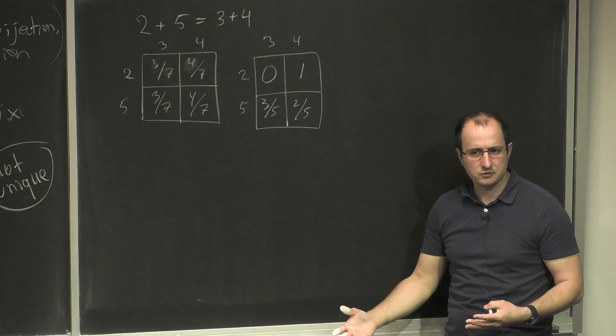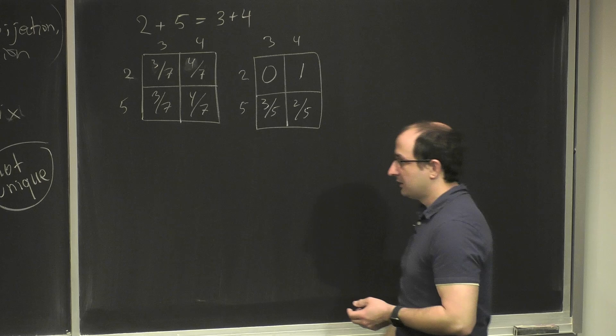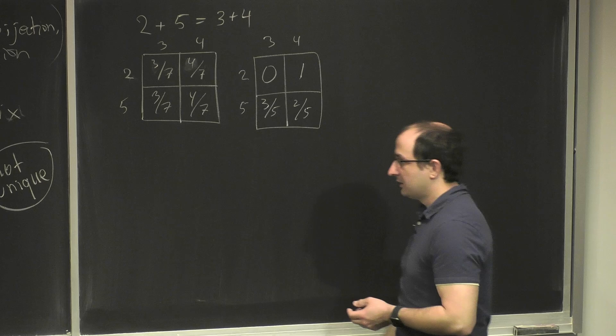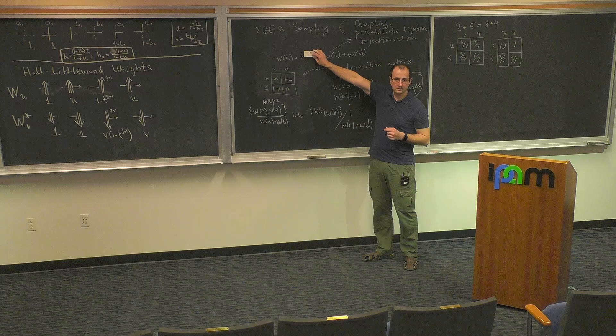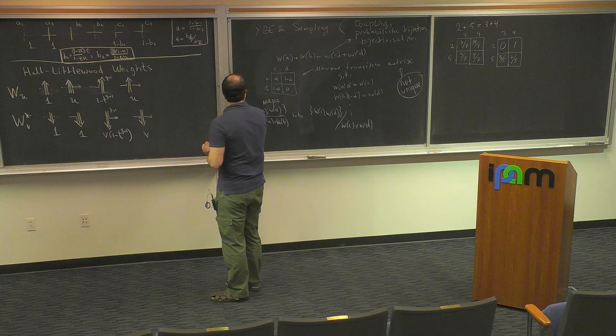Whenever you have an identity — and especially in cluster algebras — you should be thinking about this. Cluster algebra identities have a similar structure: one term equals the sum of two other terms. Let's apply this idea to the Yang-Baxter equation.